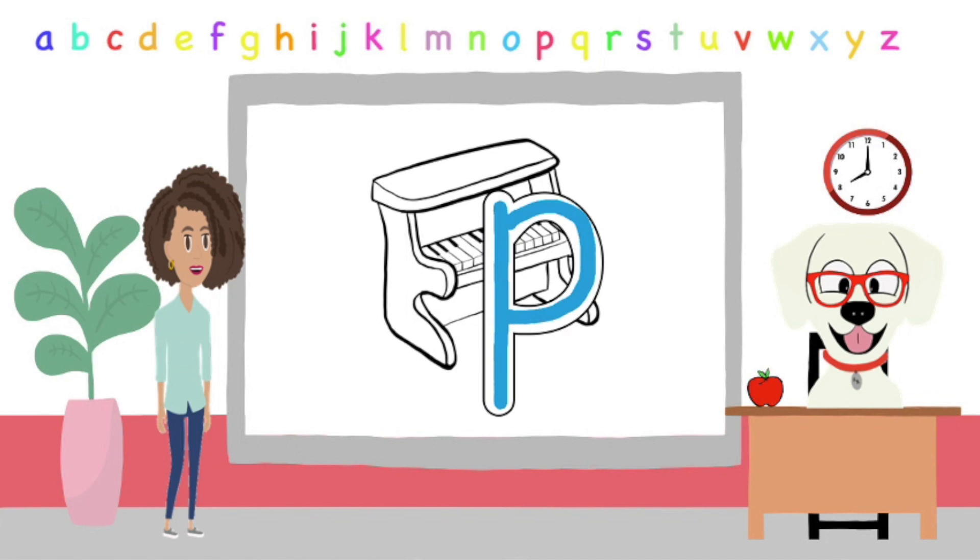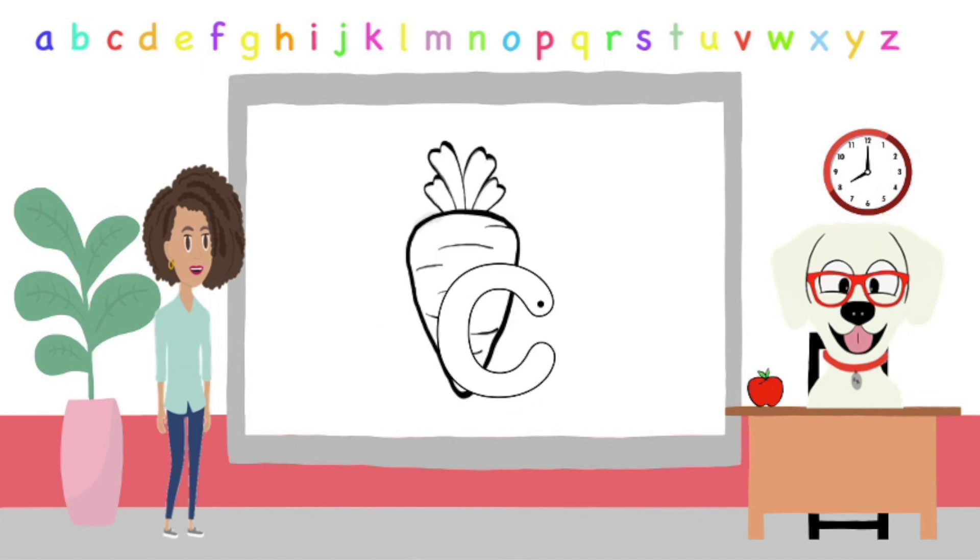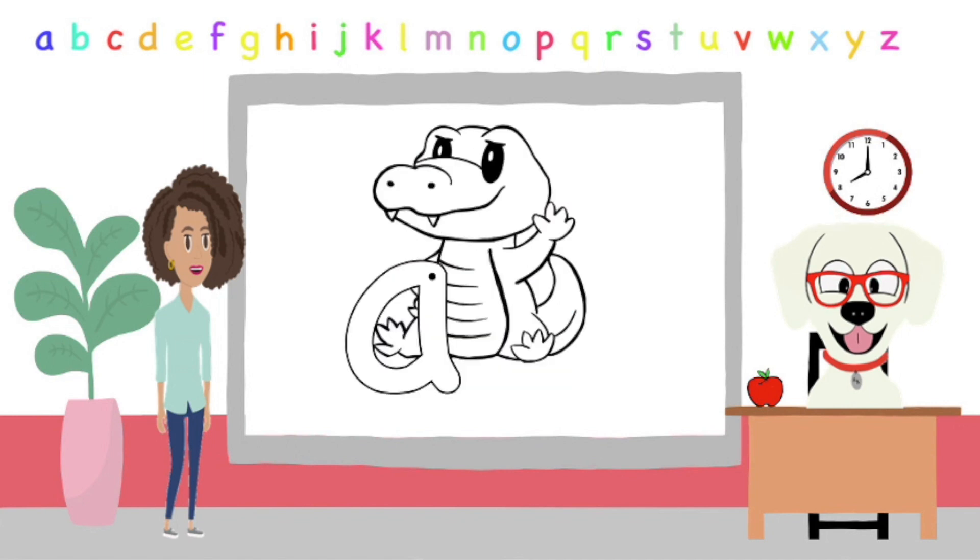Moving on to the letter C for K, K, Carrot. Draw C for K, K, Carrot. The letter A for A, A, Alligator. Let's draw the A for A, A, Alligator.